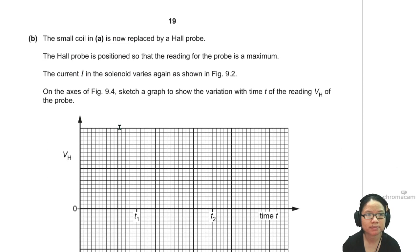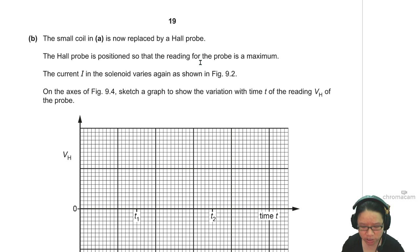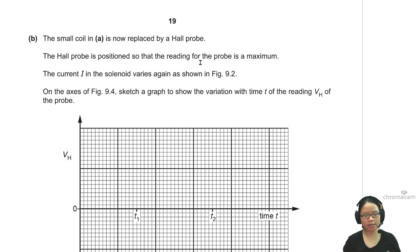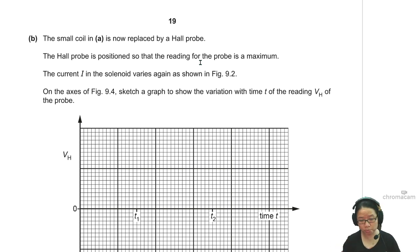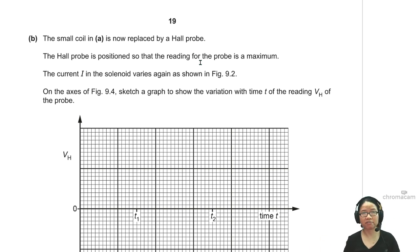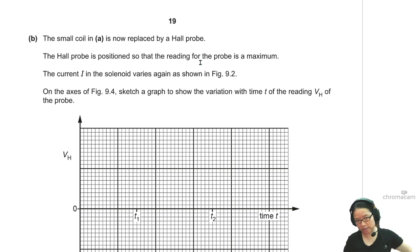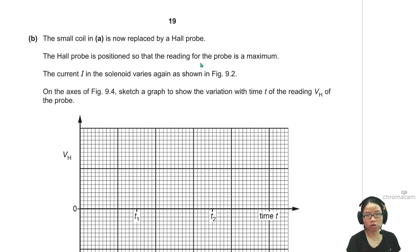Moving on to part B. The small coil in part A is now replaced by a Hall probe. This is a very common trend in magnetic fields questions — they like to see whether you are confused about Hall probe versus induced EMF. In the Hall probe, you have a Hall voltage; it is not induced EMF. The Hall voltage exists because positive charges go to one side and negative charges go to the other side.